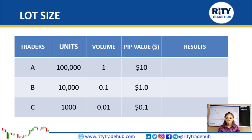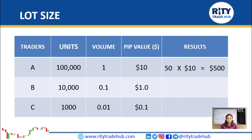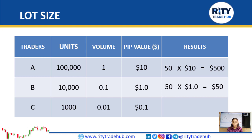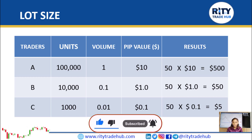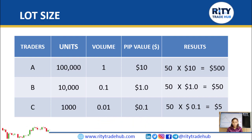If three traders trade the same currency pair and all three make 50 pips — Trader A trading one standard lot, Trader B trading one mini lot, and Trader C trading one micro lot — then Trader A makes 50 pips × $10 = $500. Trader B makes 50 pips × $1 = $50. Trader C makes 50 pips × $0.10 = $5. Even though they participated in the same trade and the market moved in their direction for the same 50 pips, their profits were different because the amount of currency they bought was different.